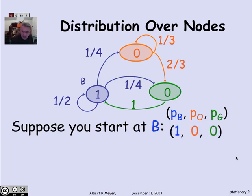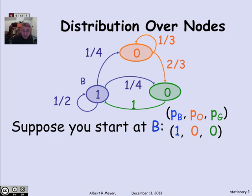I'm interested in P_B, P_O, and P_G — the probability of being at state B, the probability of being at state O, and the probability of being at state G. The sum of the probabilities is going to be 1. Initially, when I tell you that I'm at state B, it means the probability of being at B is 1, and the other two are 0.